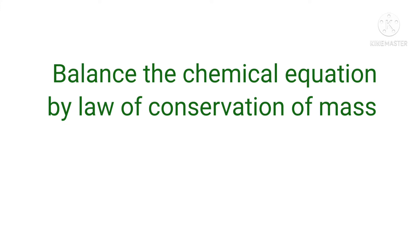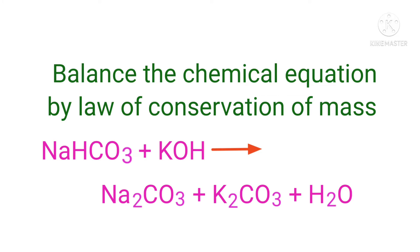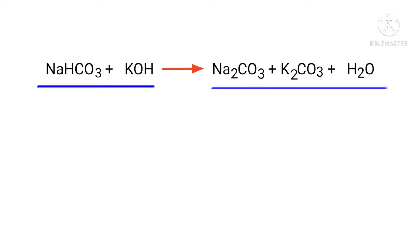Balance the chemical equation by the law of conservation of mass. Sodium bicarbonate plus potassium hydroxide yields sodium carbonate plus potassium carbonate plus water. In this equation, the reactants are sodium bicarbonate and potassium hydroxide, and the products are sodium carbonate, potassium carbonate, and water.